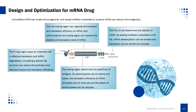As we all know, the main structure of mRNA can be divided into five parts, each with different functions. Different results can be obtained by modifying different structural elements. For example, the 5' cap region plays an important role in effective translation and mRNA degradation, so adding a special head structure can reduce the synthetic error rate and improve translation efficiency. The coding region determines the specificity of antigens; by optimizing the use of codons and bases, the translation efficiency of mRNA templates can be improved and the attack of endonucleases can be reduced. The non-coding region can regulate the transport and translation efficiency of mRNA, and optimizing the non-coding region can improve the stability and translation level of mRNA.